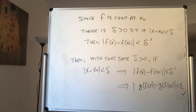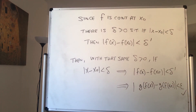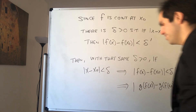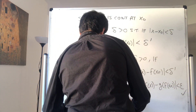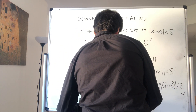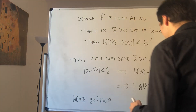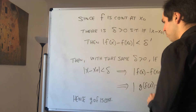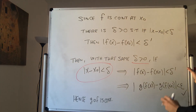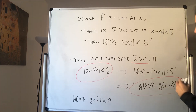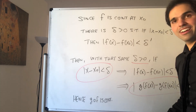Therefore we're done and the composition is continuous. Hence g composed with f is continuous — because what we had to show was that there exists some delta such that if the input is within delta of x naught, then the output is within epsilon of g of f of x naught. Thank you very much.